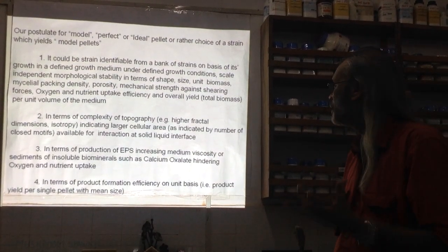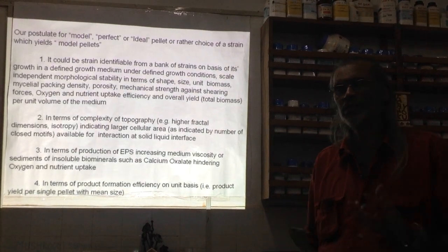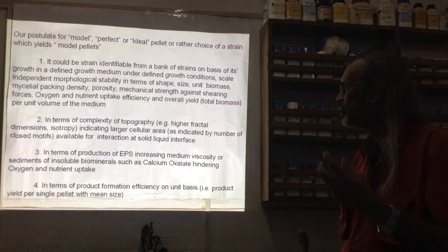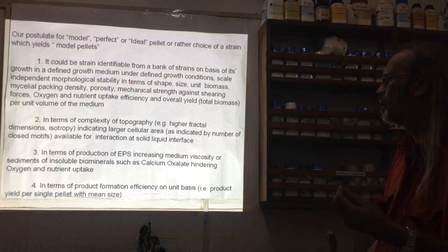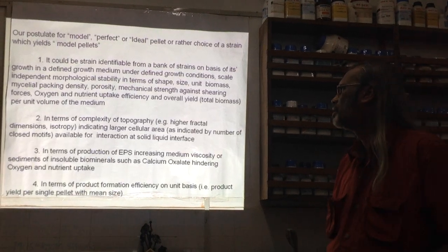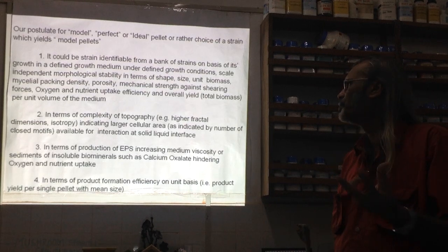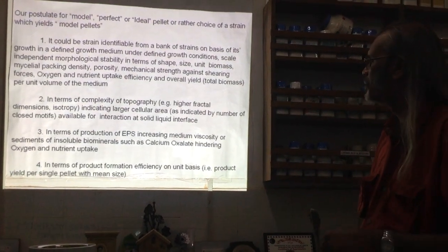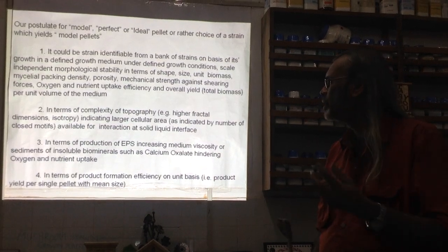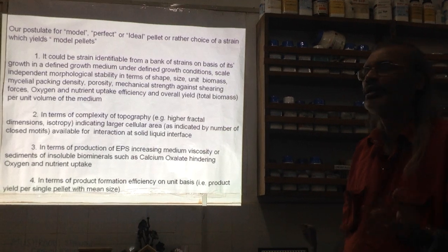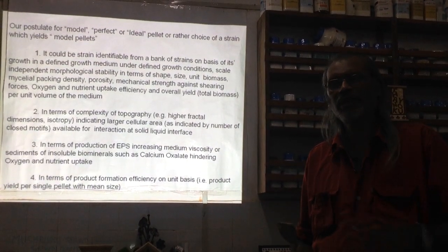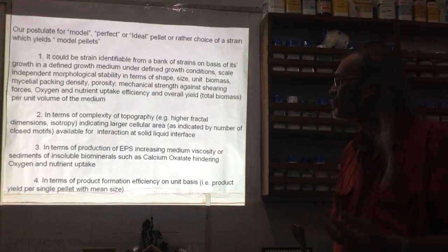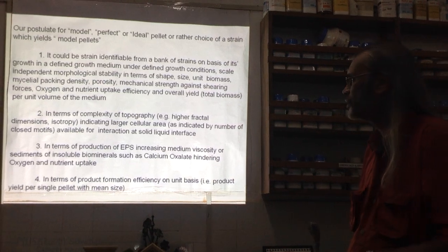Unit biomass per unit weight of pellet and mycelial packing density are very important, giving an idea of how efficient the biomass packaging is and the ratio of solid to voids left in the pellet. Porosity gives an idea of the pellet structure in terms of air pockets or pockets where CO2 may be trapped. Mechanical strength against shearing forces also depends on hyphal wall integrity and other factors deciding whether the pellet can withstand high propeller forces in agitational operations.